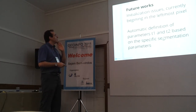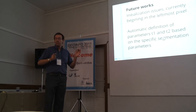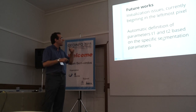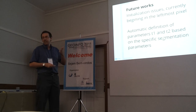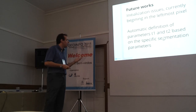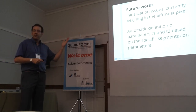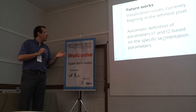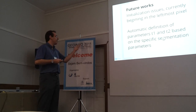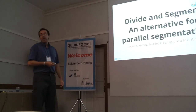Future work includes addressing initialization issues — we currently always begin with the leftmost pixel, and our experiments only considered horizontal lines, though extension to vertical lines is possible. We also plan to investigate automatic definition of parameters T1 and T2 based on specific segmentation algorithm parameters, which could yield better results. Thank you.